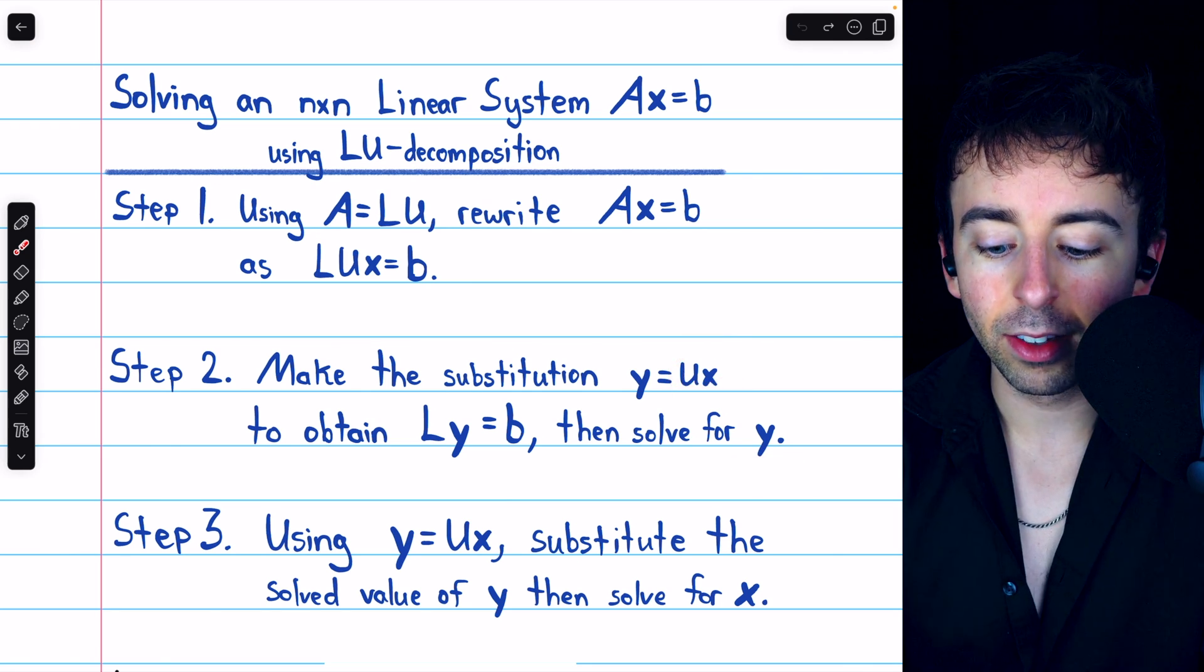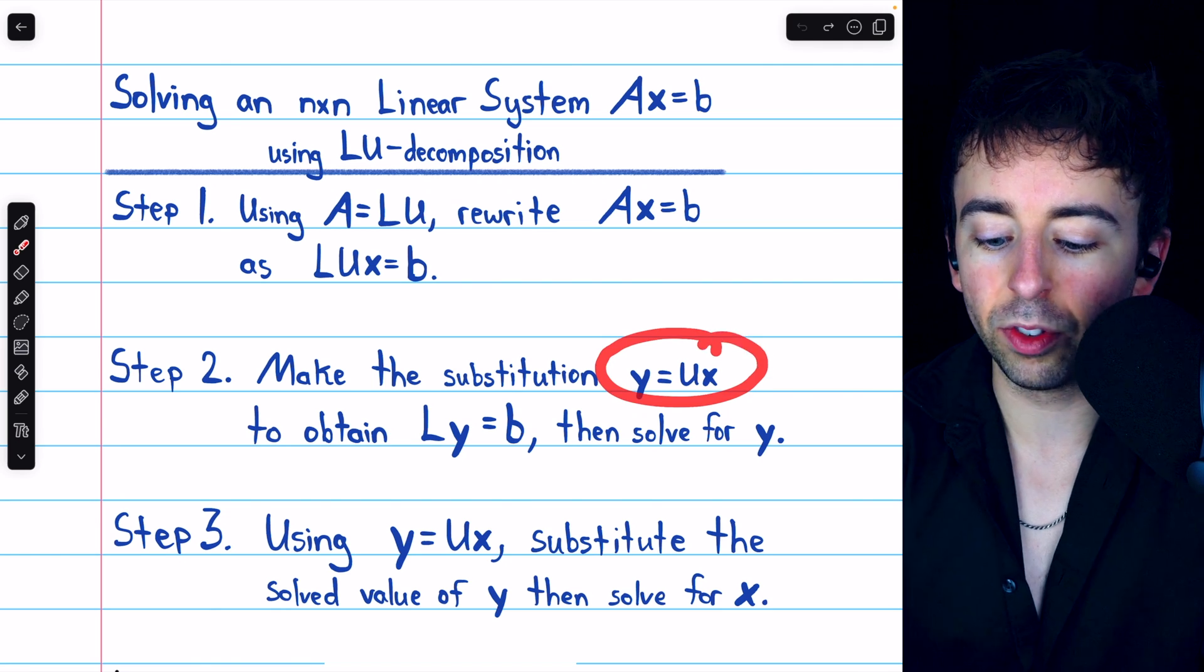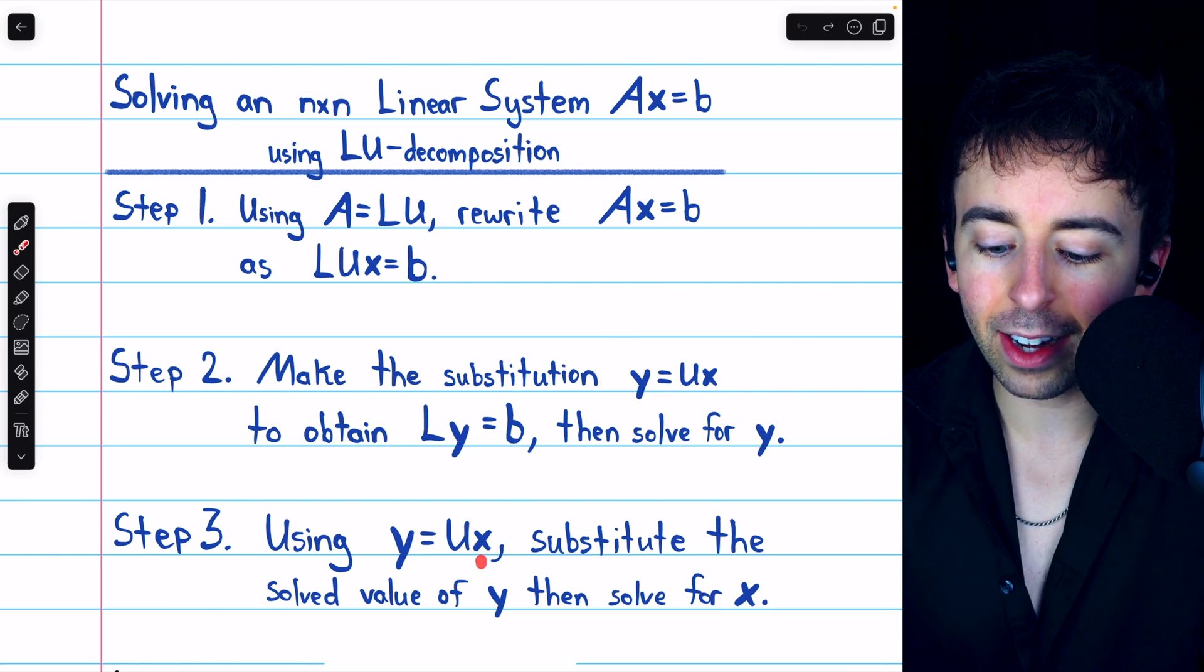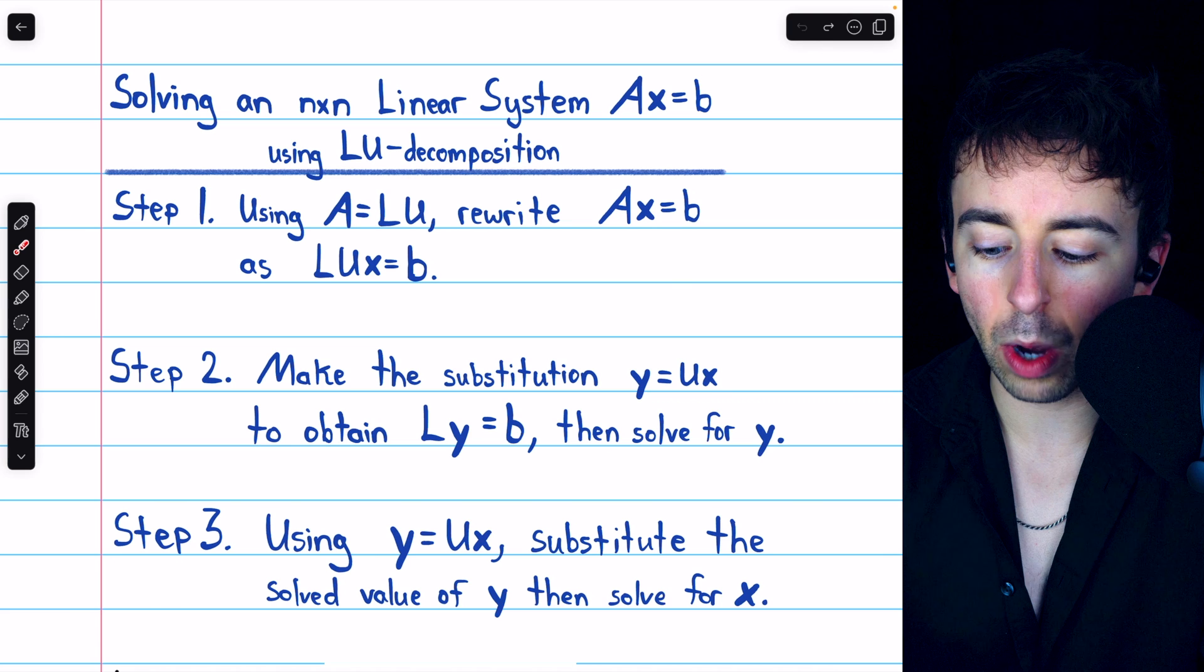Once we know what Y is, that's U times X. So we can solve Y equals U times X for X now that we know those values of Y.